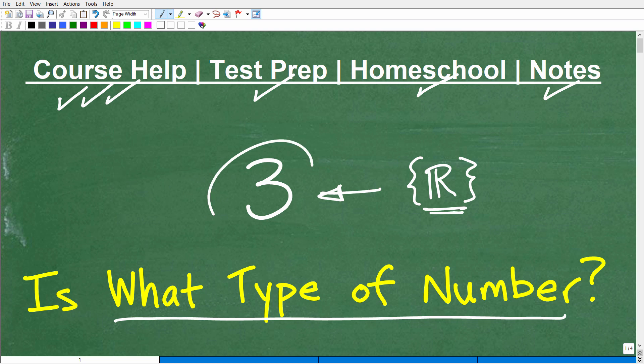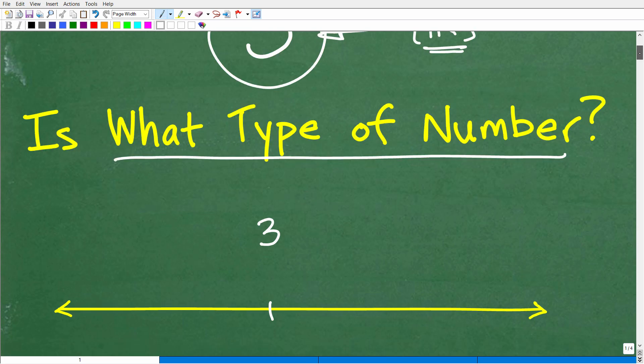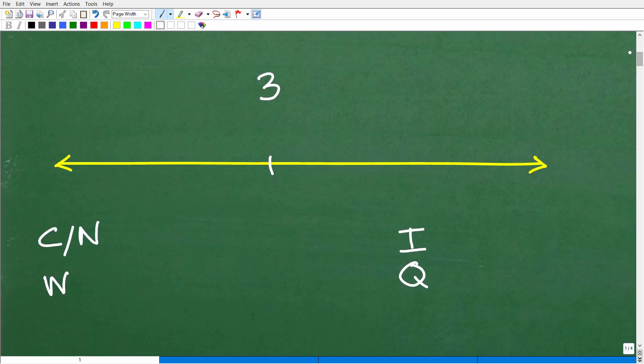Three is what type of number? And I just kind of picked 3 for no particular reason, but if that happens to be your lucky number, that's awesome as well. So let's go ahead and get into it. And here, what we're looking at is the real number line.